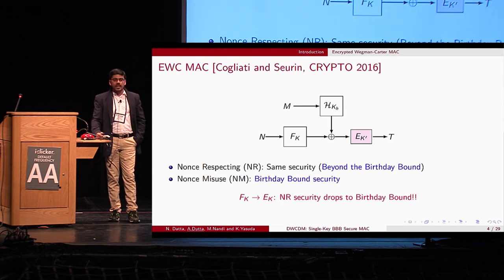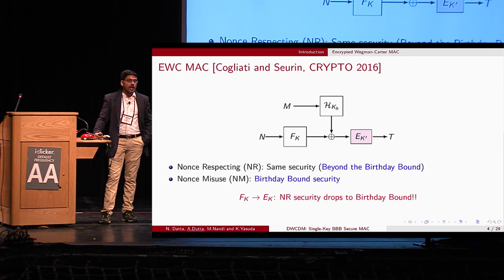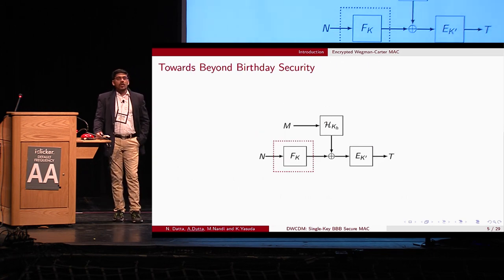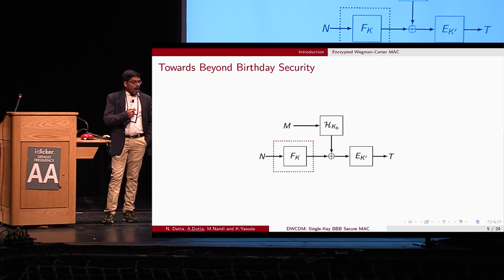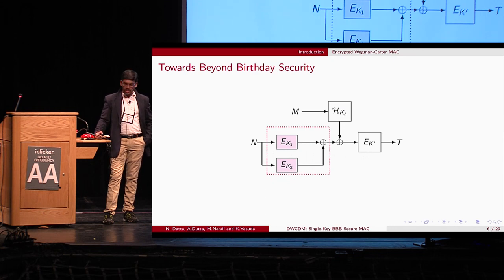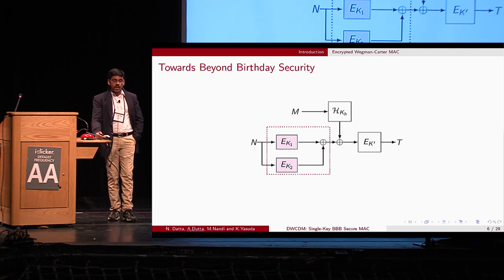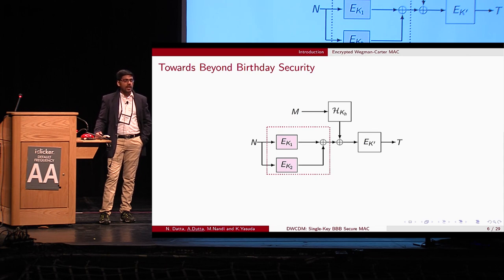There are few practical candidates for pseudo-random functions, so one may want to replace F_K with a pseudo-random permutation or block cipher E_K. But once you replace F_K with E_K, the nonce-respecting security of the resulting construction drops to birthday bound. To achieve beyond-birthday-bound security in the nonce-respecting setting, one popular approach is to instantiate F_K with the sum-of-permutations function, which is an optimally secure PRF, giving optimal security.